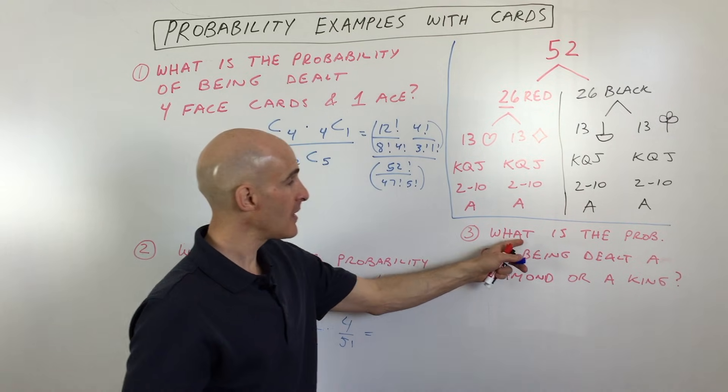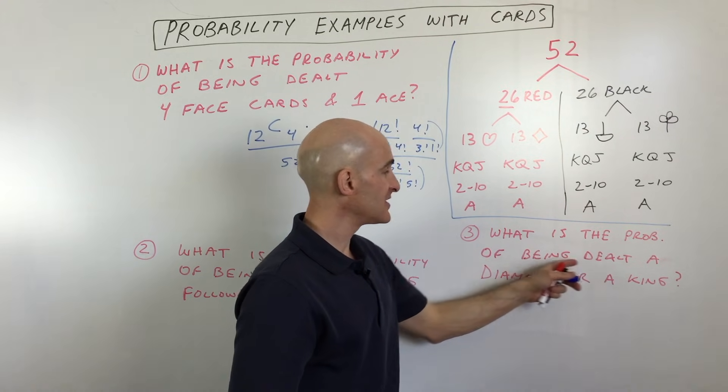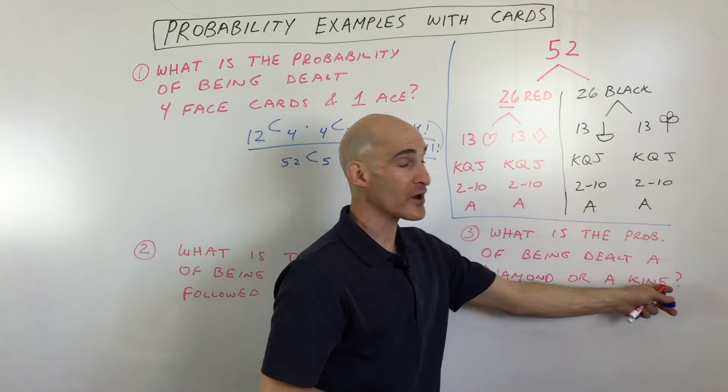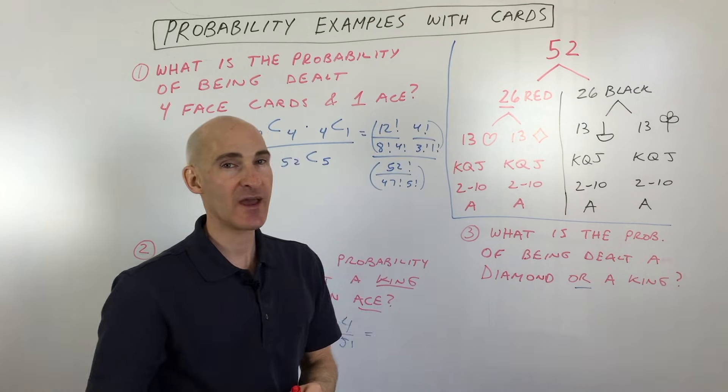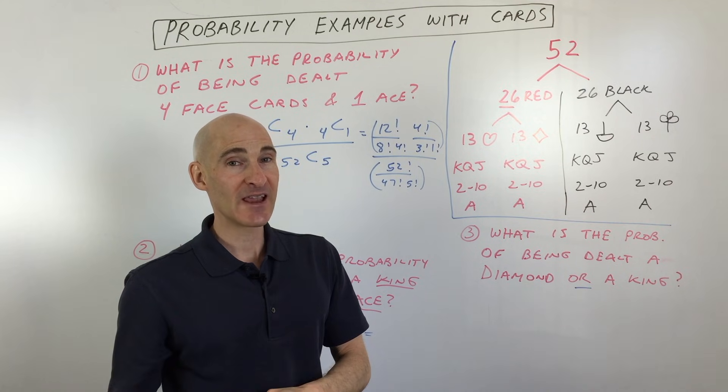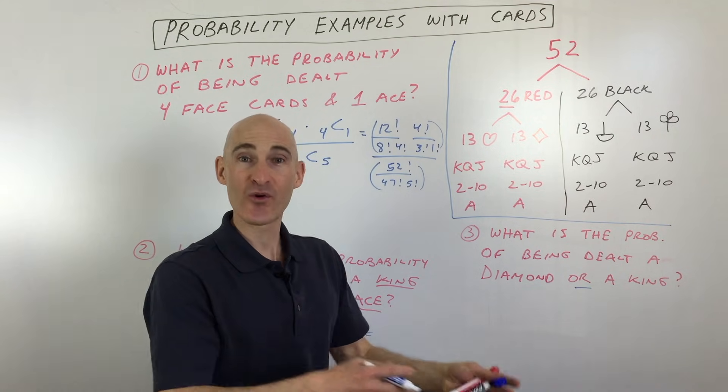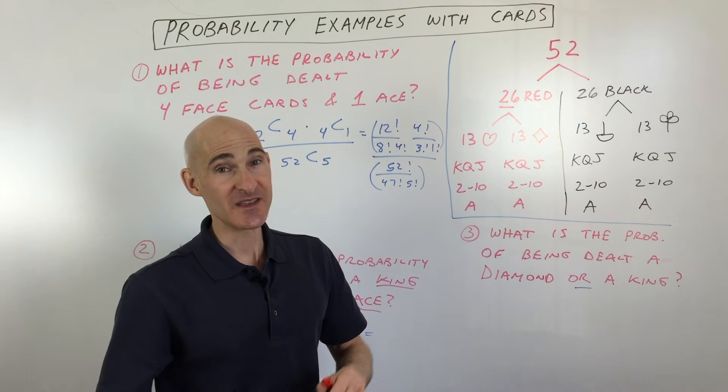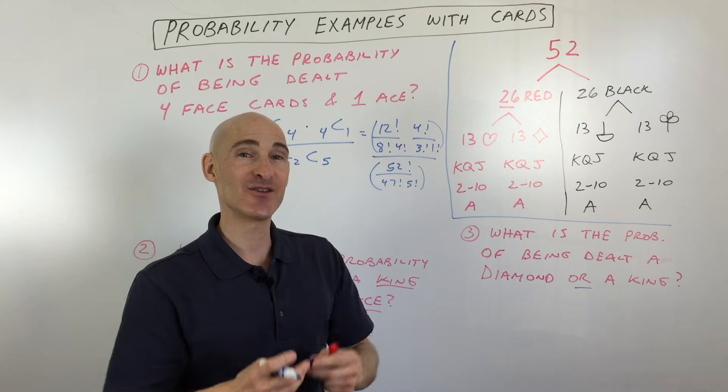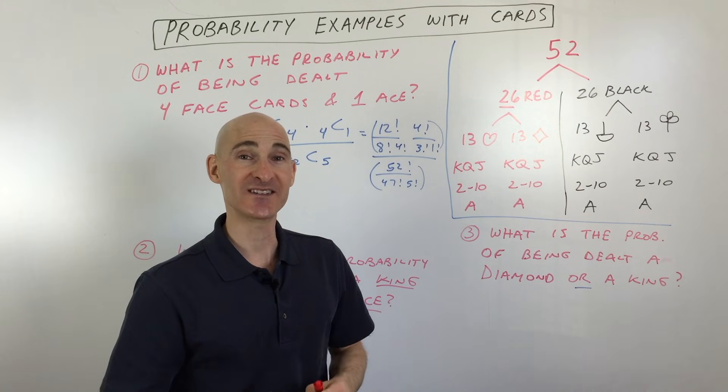Last example, number three here. What is the probability of being dealt a diamond or a king? Now, this is interesting. This word or sometimes confuses students in math. Or, in normal everyday language, means like I'm going to go to the store or I'm going to stay home. But in math, or means both. It means union. It means like you're combining those sets and quantities together.